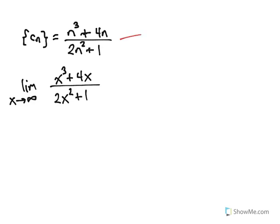In the third example, the corresponding real-valued function is again a rational function, but this time the degree of the numerator is greater than the degree of the denominator. As x gets very large, the numerator is much larger than the denominator, so this limit does not exist — the rational function goes to infinity. Therefore the sequence diverges, because the terms do not approach a particular number as n gets larger and larger.